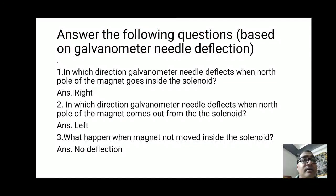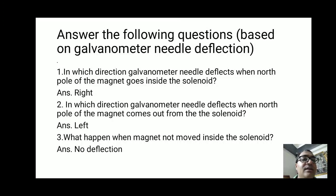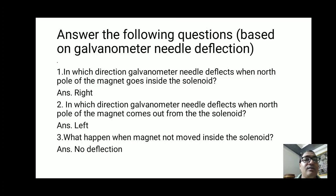Based on this activity, three questions are typically asked in the board exam. First question: In which direction does the galvanometer needle deflect when the north pole of the magnet goes inside the solenoid? Answer: it deflects towards the right. Second question: In which direction does the galvanometer needle deflect when the north pole comes out from the solenoid? Answer: it deflects towards the left. Third question: What happens when the magnet does not move inside the solenoid? Answer: there is no deflection of the galvanometer needle.